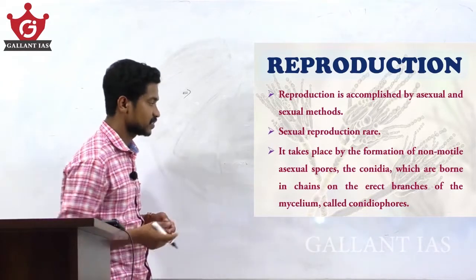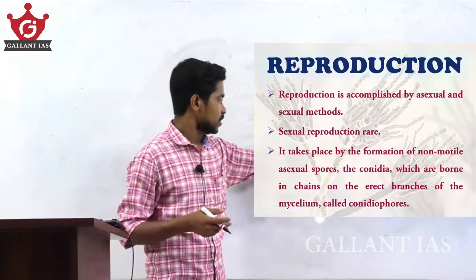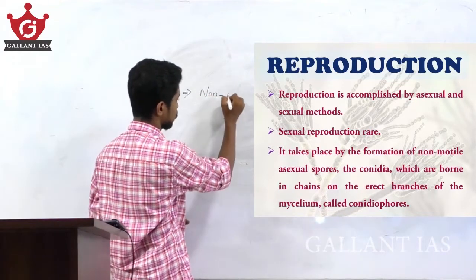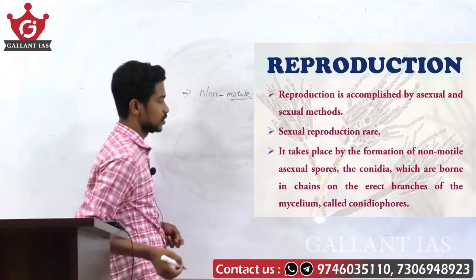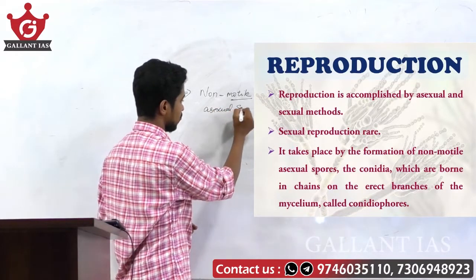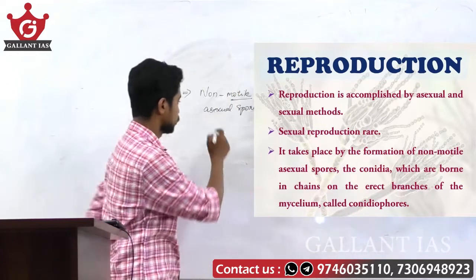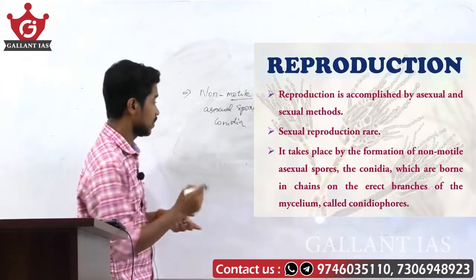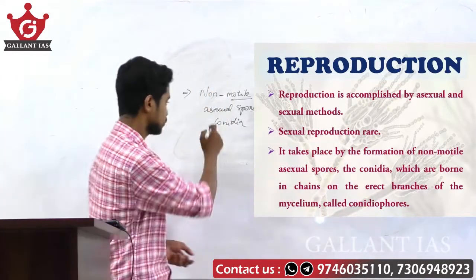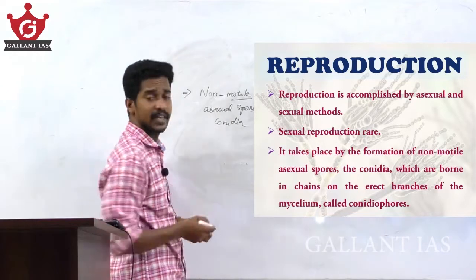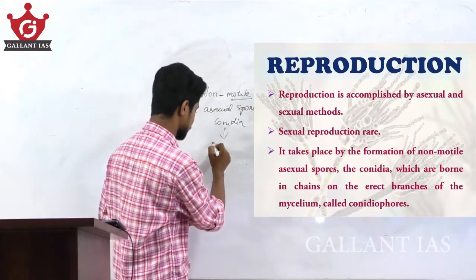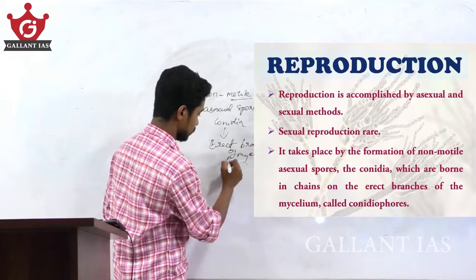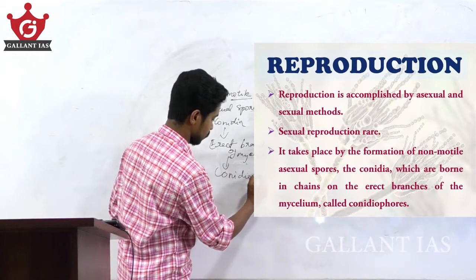The asexual reproduction is by the formation of non-motile asexual spores called conidia. These conidia are born in chains on the erect branches of the mycelia, and those erect branches are called conidiophores.